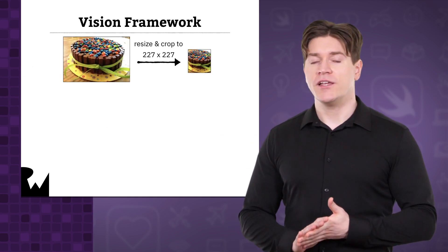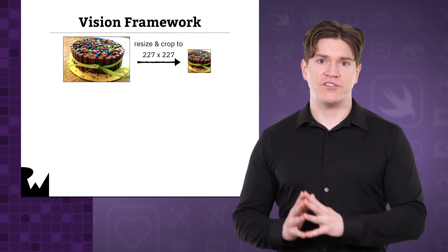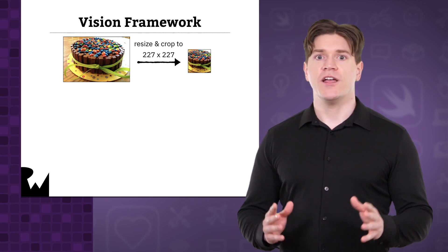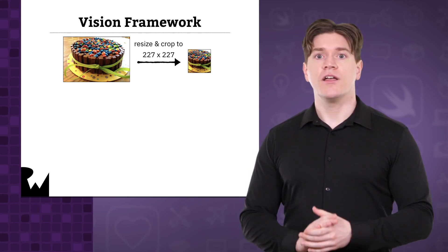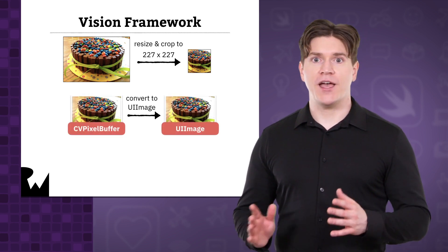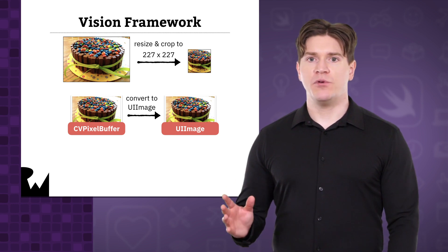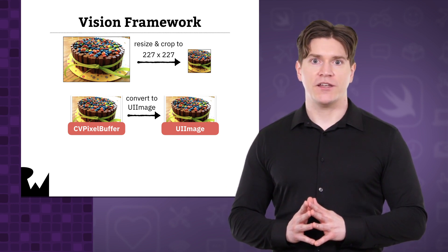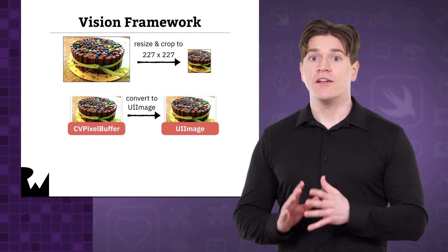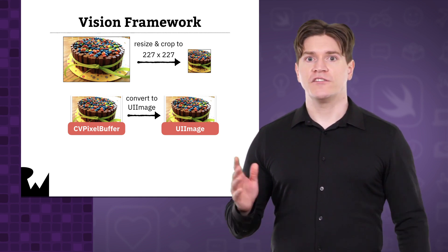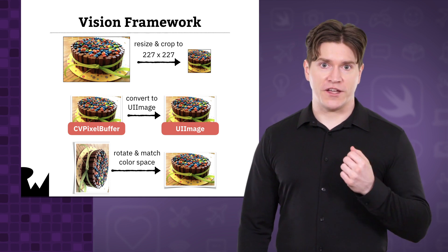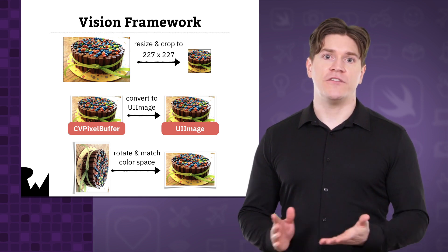Take the Healthy Snacks model — it needs a square 227 pixel image as input, but images from the photo library or the camera will be much larger and are typically not square. Vision will automatically resize and crop the image. In the automatically generated Swift file for the ML model, the input image has to be a CVPixelBuffer object, but the UIImagePickerController gives you a UIImage instead. Vision can do the conversion for you, and can also rotate an image so that it's always right side up and match its color space to that of the device.